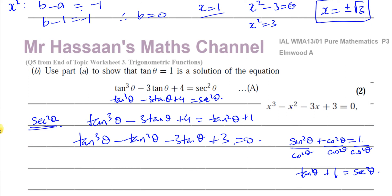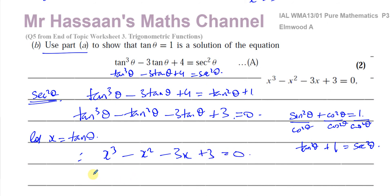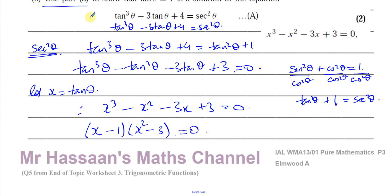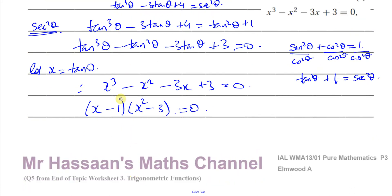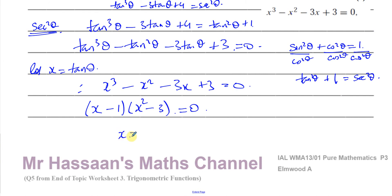Since the equation is the same form as part (a), if we let x = tanθ we get x³ - x² - 3x + 3 = 0, which factorizes as (x - 1)(x² - 3) = 0. We know x = 1 is a solution. Therefore, since x = tanθ, tan θ = 1 is a solution of our equation.